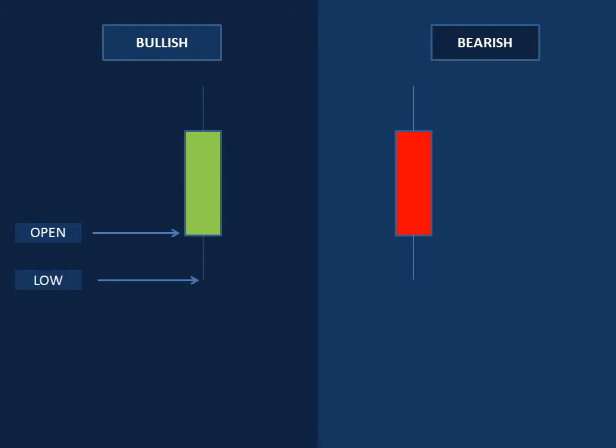Say this candle was a five-minute candle and it opened at 10 o'clock. At one past ten it went to its lowest point, then kept fluctuating. At three past ten it went very high — that is where we had our high. At four past ten it was moving between the high and the open, and then at five past ten the candle closed at that final position. That is how a five-minute bullish candle operates.